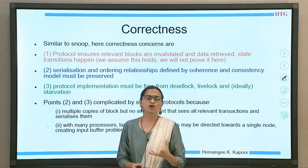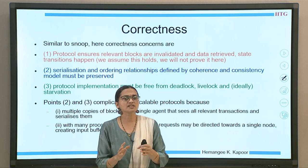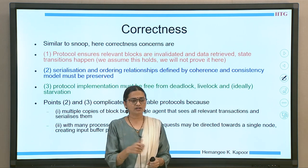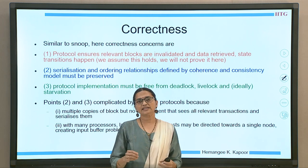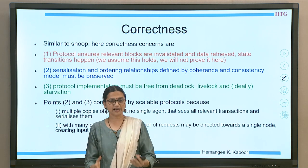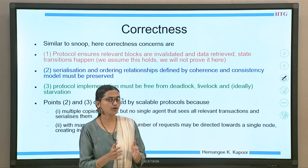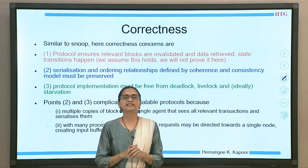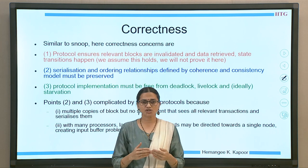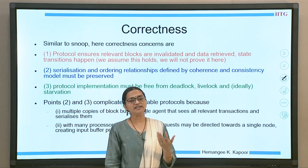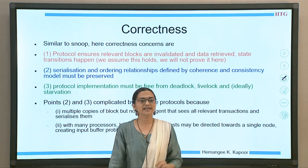The first level — that the protocol ensures invalidation — can be assumed and we will not discuss this further. Serialization and deadlock/livelock freedom become more complicated in a large-scale network. We do not have a single entity like a bus through which we could serialize transactions or limit the number of concurrent transactions. In the current scenario, we have a scalable network with multiple transactions in flight at a time, multiple copies, and multiple transactions happening in parallel. How do we still guarantee serialization, correctness, and deadlock freedom? We need to handle this more carefully in a scalable network.